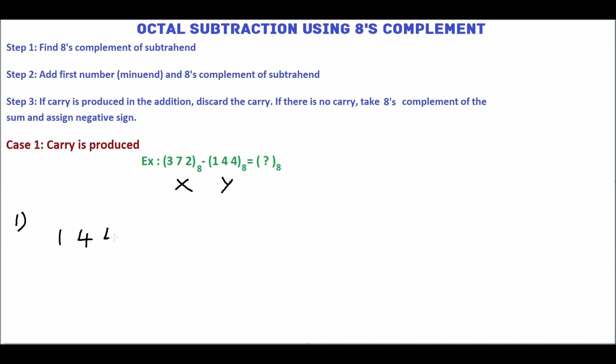subtract each and every digit from number 7. 7 minus 4 is 3, 7 minus 4 is 3, 7 minus 1 is 6, which is 7th complement.